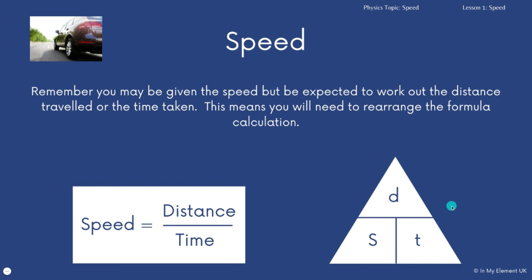And if we want to rearrange it again and we take away the time because we've been given the distance and the speed, and we want to know the time it's taken to the object to move, we do distance divided by speed.